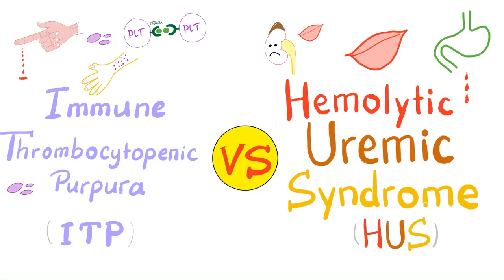Hey guys, it's Medicosis Perfectioneros where medicine makes perfect sense. Today we continue our bleeding and coagulation playlist and compare between immune thrombocytopenic purpura, or immune thrombocytopenia, and hemolytic uremic syndrome. Let's get started.